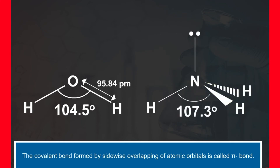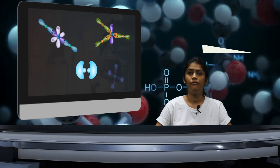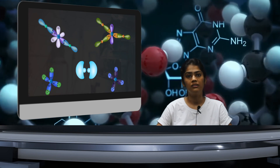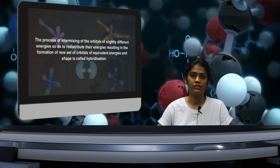For example, valence bond theory could not explain the structures and bond angles of H₂O, NH₃, etc. However, in order to explain the structures and bond angles of such molecules, Linus Pauling modified the valence bond theory using the hybridization concept. This leads us to our next topic — hybridization.